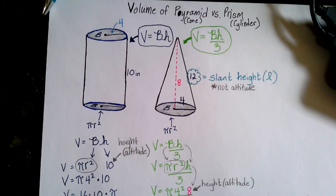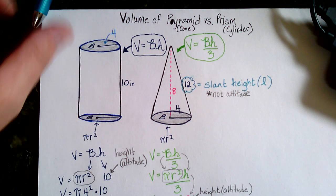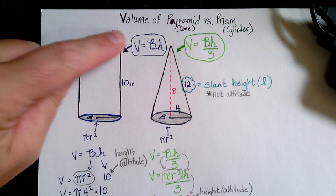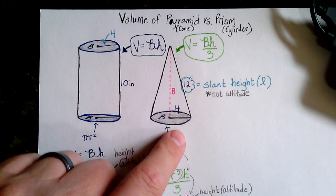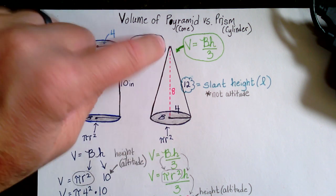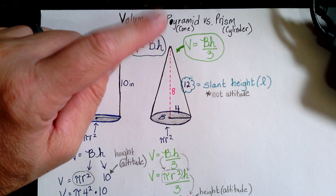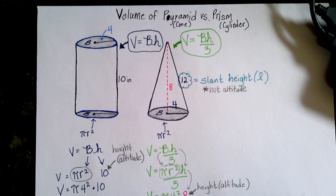So key ideas: if it has two bases and we're trying to find the volume, you do not divide by three. If it is one base coming to a point, it is a pyramid or a cone, you divide by three.